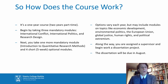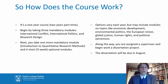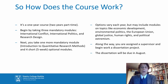In the second term, you have one more mandatory module — our module on quantitative research methods — and then you get to choose four short optional modules, each five weeks long. These optional modules vary every year, and we try to offer a good variety. It's one of the things students say they like most about our program. We have offered modules on topics like economic development, environmental politics, the European Union, global justice, human rights, and political extremism — just a sampling of the kinds of topics we cover.